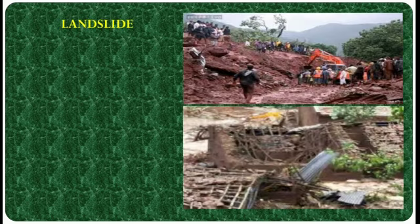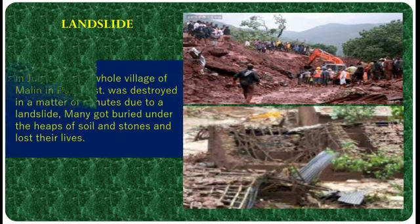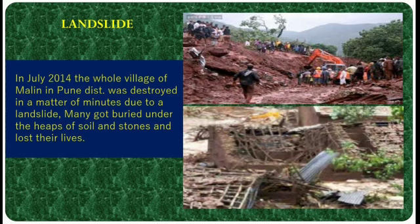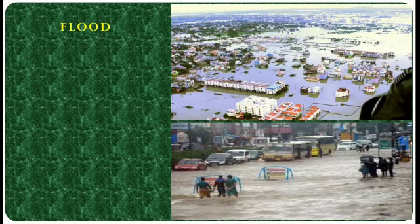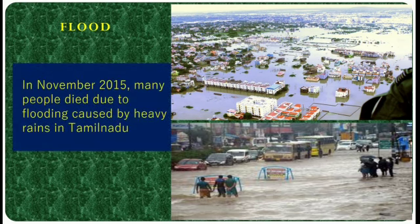The next picture shows the effects of landslide. In July 2014, the whole village of Malin in Pune district was destroyed in a matter of minutes due to a landslide. Many got buried under the heap of soil and stones and lost their lives. This is from Tamil Nadu. In November 2015, many people died due to flooding caused by heavy rains in Tamil Nadu.